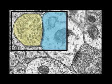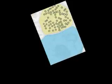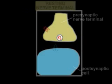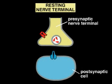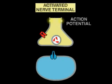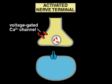The synapse converts the electrical signal of the action potential in the presynaptic cell into a chemical signal. When an action potential reaches a nerve terminal, it opens voltage-gated calcium channels in the plasma membrane, allowing calcium ions to flow into the terminal.